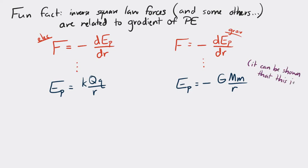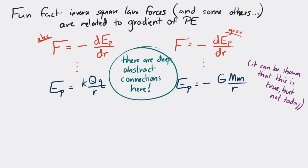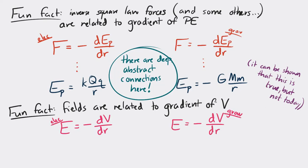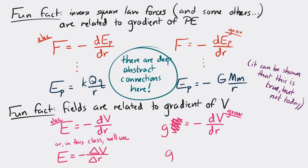One key takeaway is that there are some relatively deep and abstract connections between these quantities. For inverse square law fields, the field is related to the gradient of the potential. The electric field equals the negative of the gradient of the electric potential, and the gravitational field equals the negative of the gradient of the gravitational potential. In this class, we'll express this as E = −ΔV/Δr and g = −ΔV/Δr, where ΔV is the change in potential and Δr is the distance between two locations.